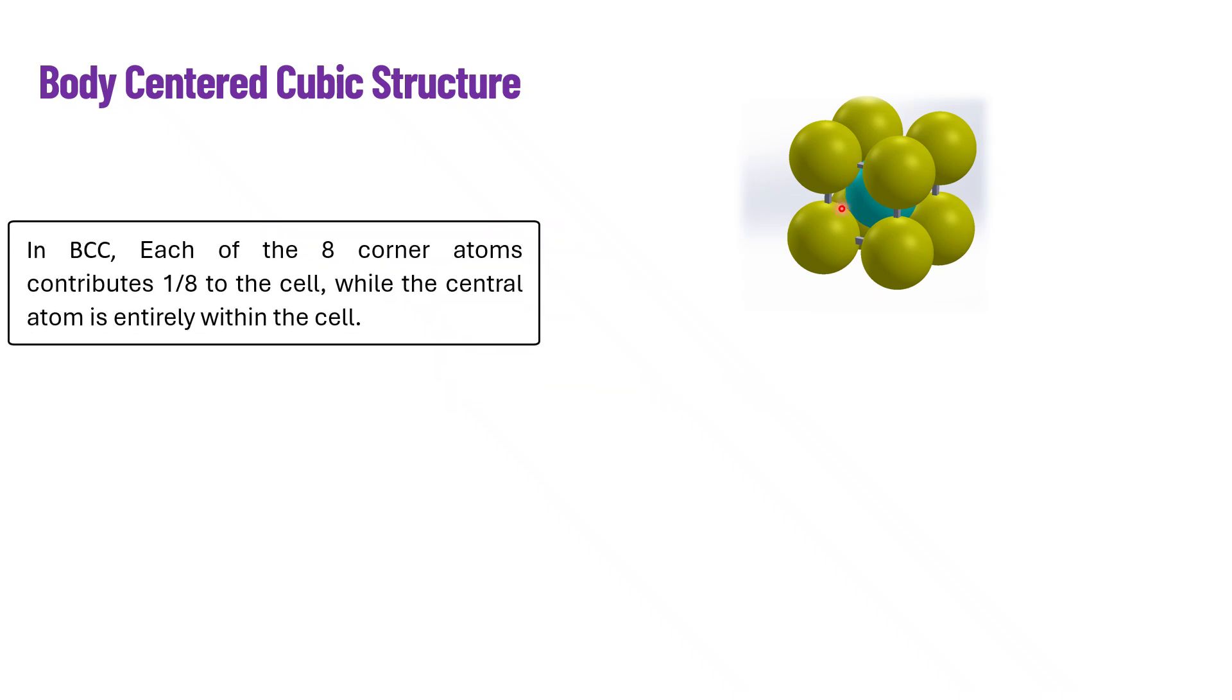In BCC each of the 8 corner atoms contributes 1/8 to the cell while the central atom is entirely within the unit cell.